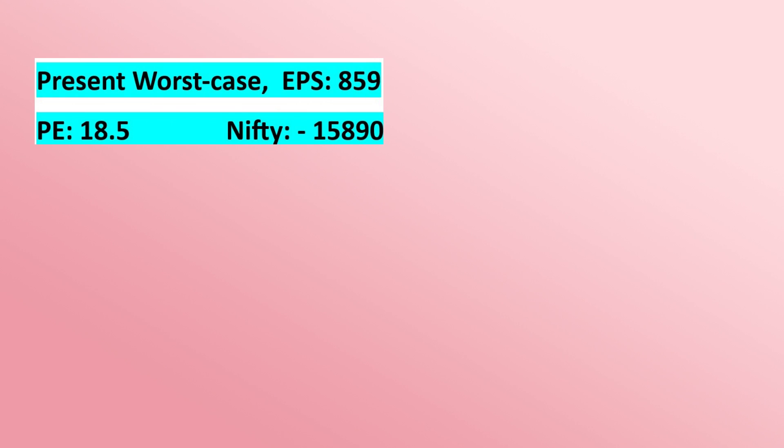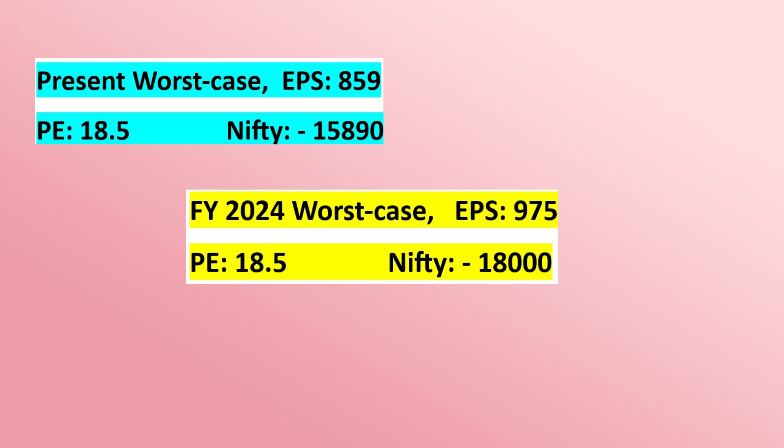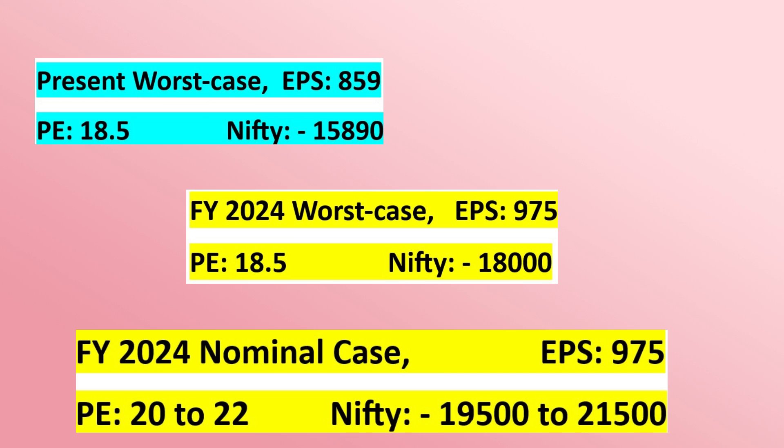So in the worst case — applying the March 2020 P/E of 18.5 to 859 EPS — the present worst case Nifty value is 15,890. But applying the same 18.5 P/E to 975 EPS for May 2024 gives a worst case of 18,000. For the normal operating range of 20 to 22 P/E, the range in May 2024 would be 19,500 to 21,500. Note: these values are only valid if Nifty achieves the 975 EPS target; if it fails, these estimates change as well.